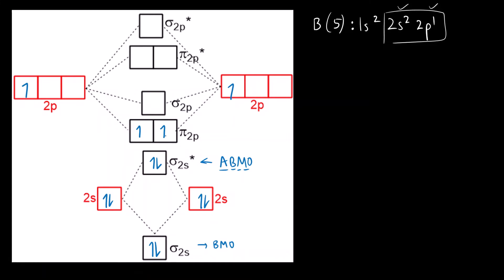Pairing takes place only when both orbitals having the same energy are singly filled. A single electron is added to both degenerate orbitals first, then pairing occurs. This is Hund's rule of maximum multiplicity. Here you can see there are two unpaired electrons.